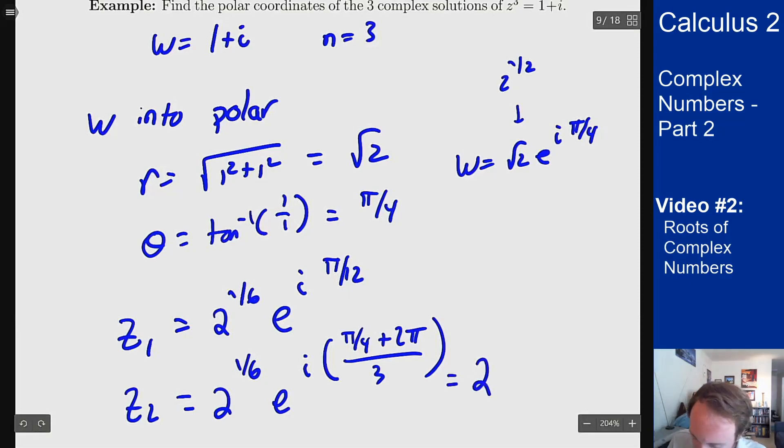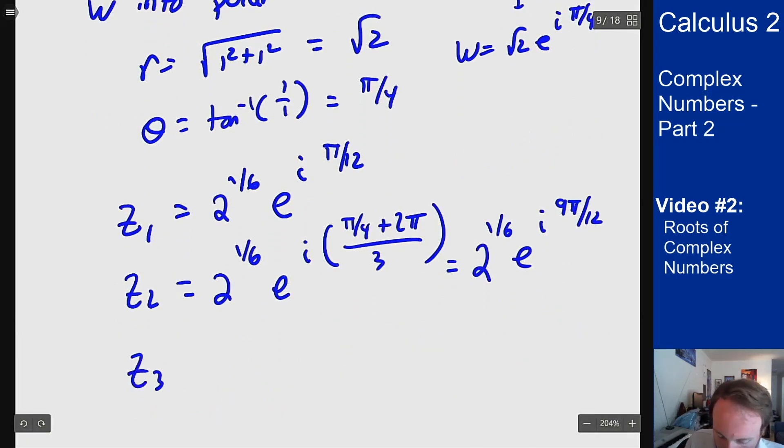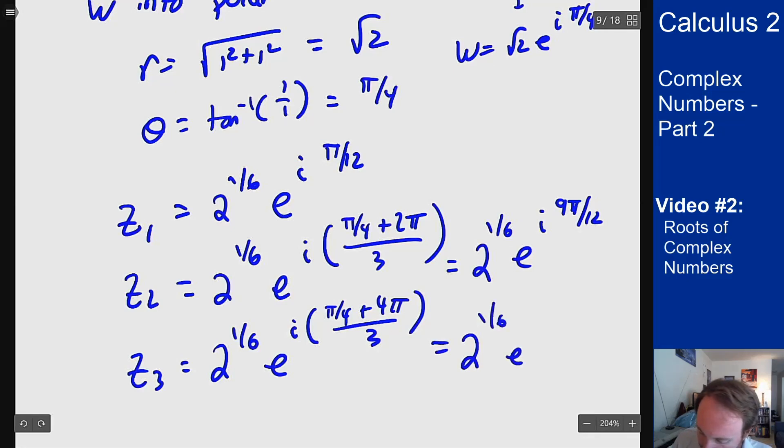So I get 2 to the 1 sixth e to the i 9 pi over 12 and then z3 is going to be 2 to the 1 sixth e to the i pi over 4 plus 4 pi over 3 which is 2 to the 1 sixth e to the i 17 pi over 12 and that's all three solutions.